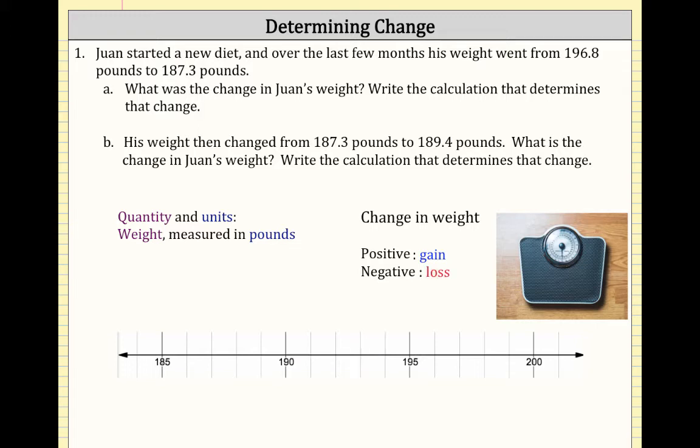Another way to think about this is a change in weight as a loss. Imagine starting at 195 pounds and losing weight — on a number line, that would be indicated by an arrow going to the left. So gains are represented by going right from a starting point, and a negative change is represented by going left.